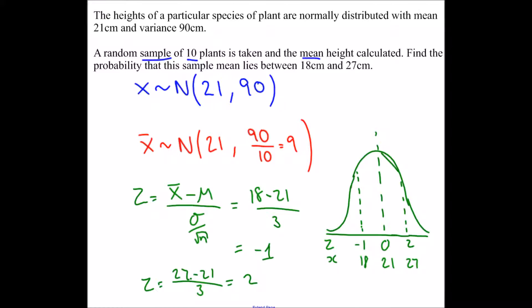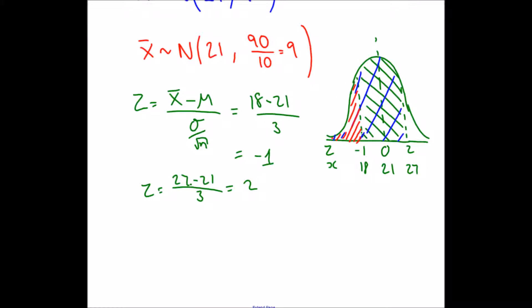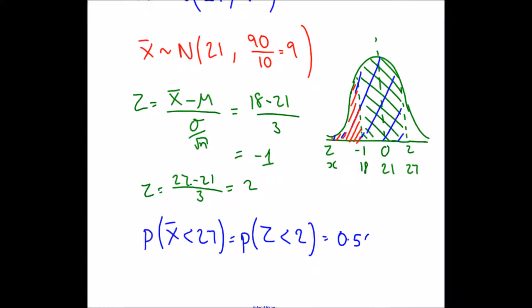We want the probability that the sample mean lies in the shaded region between −1 and 2. To find this, I first find the area below z = 2 (the blue area), since the normal distribution tables give less-than probabilities. The probability that x-bar < 27 equals P(Z < 2). Looking up z = 2.00 on page 19 of the tables gives 0.9772... actually here it gives 0.5080 after subtracting 0.5, so the full area is 0.9772.